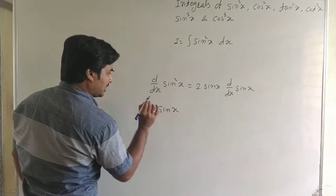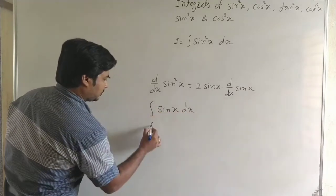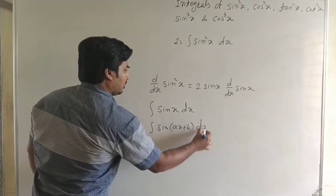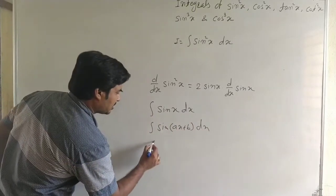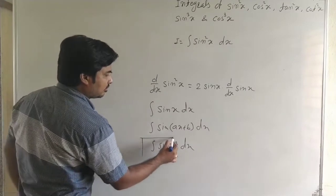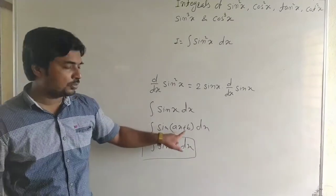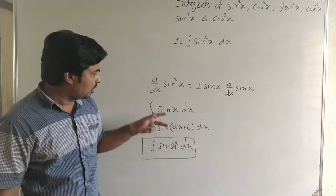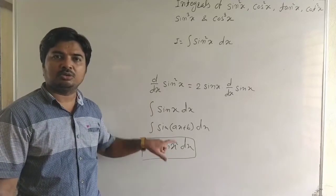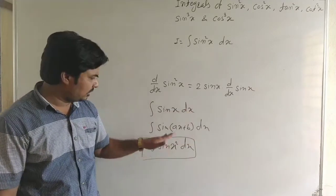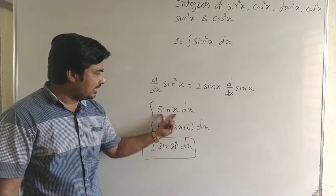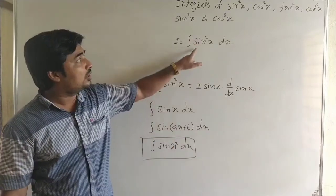For integration, sin x is a standard function. We can also find the integral of sin(ax + b) since it is a linear composite form. But sin(x²) cannot be integrated directly — that requires substitution, which is the next article. So we convert sin²x, cos²x, tan²x, cot²x, sin³x, and cos³x into the standard forms sin x or sin(ax + b) using trigonometric formulas.